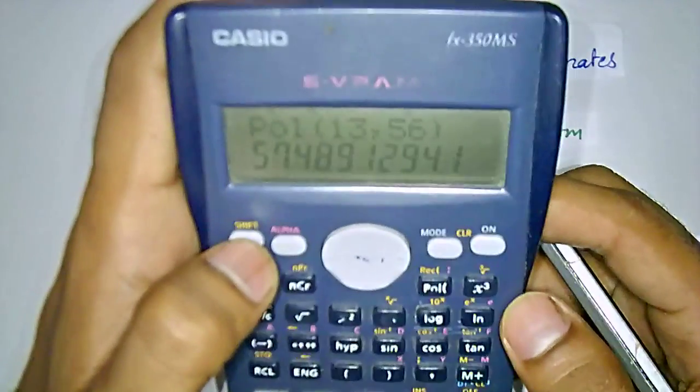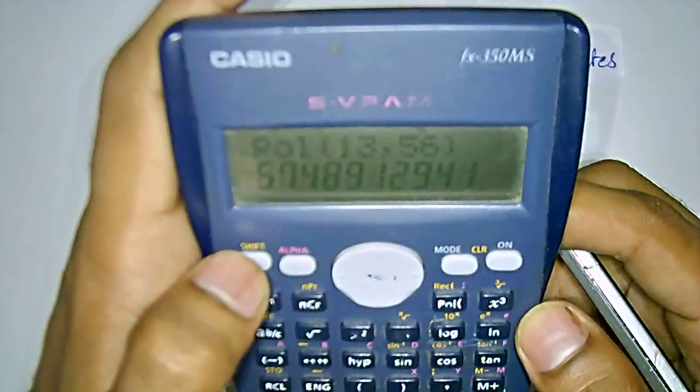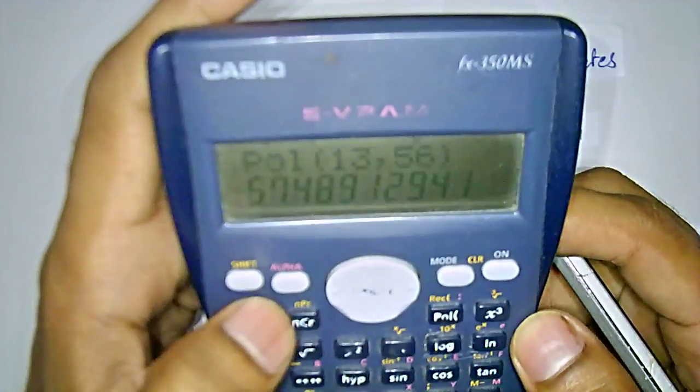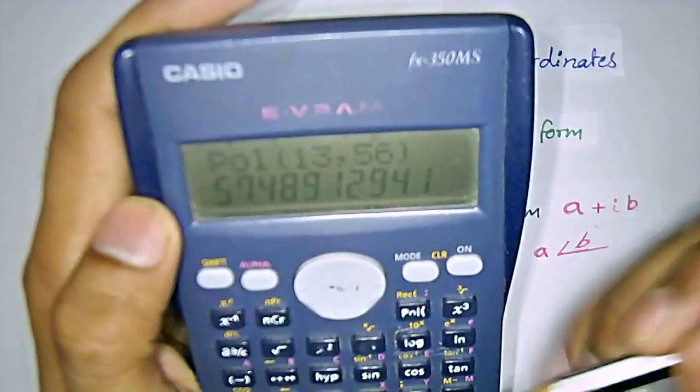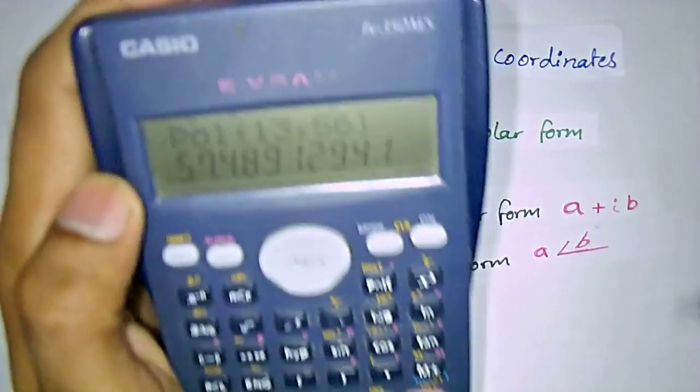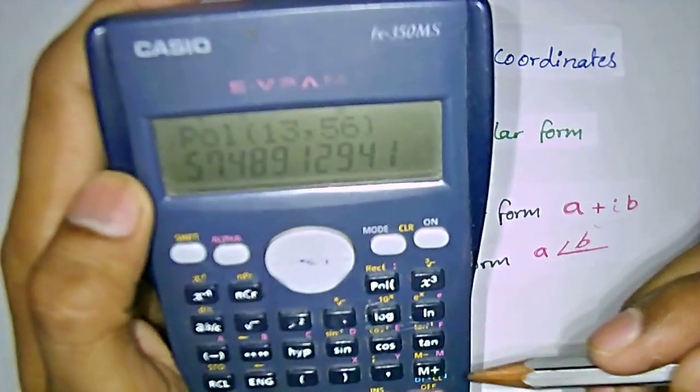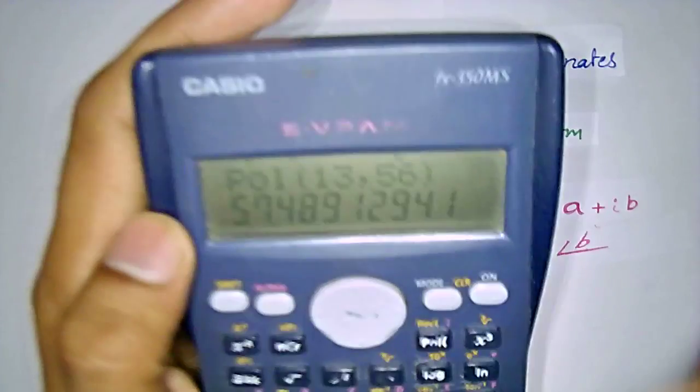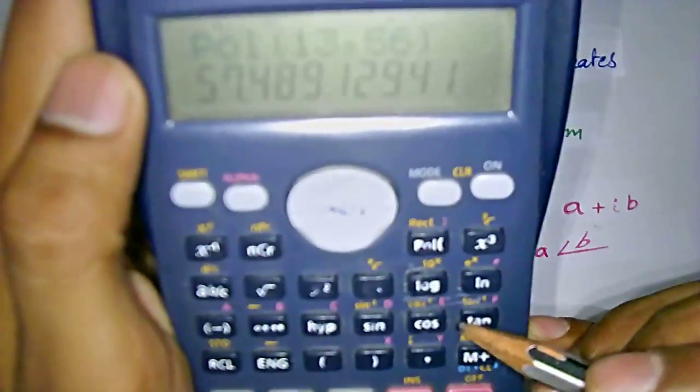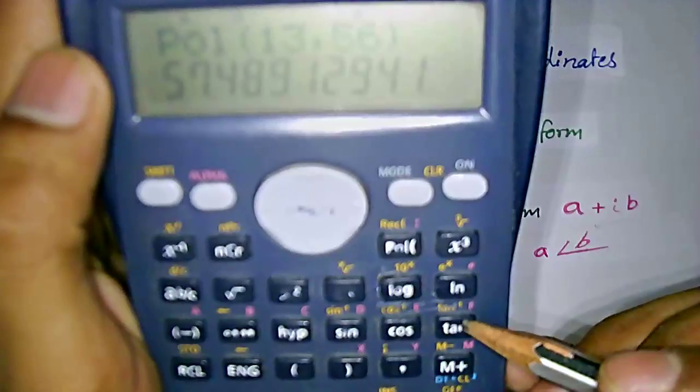The best thing about this kind of basic scientific calculator is you have the advantage of storing the angle and modulus value in each separate thing. In this calculator, it will be stored in E and F.